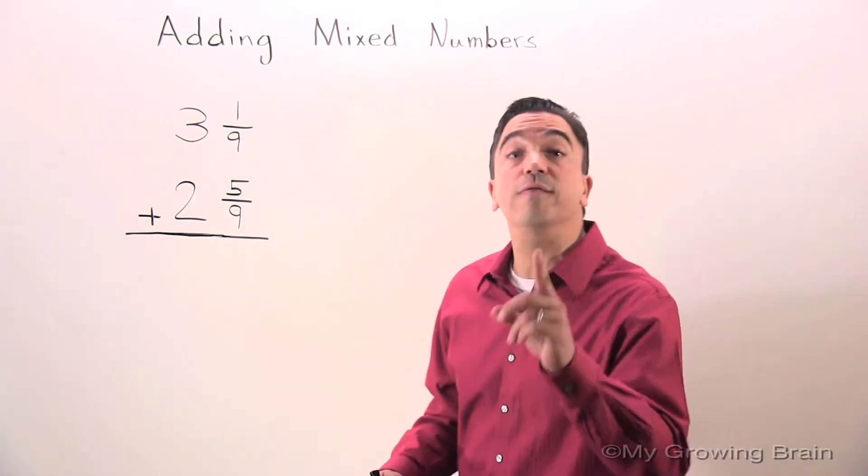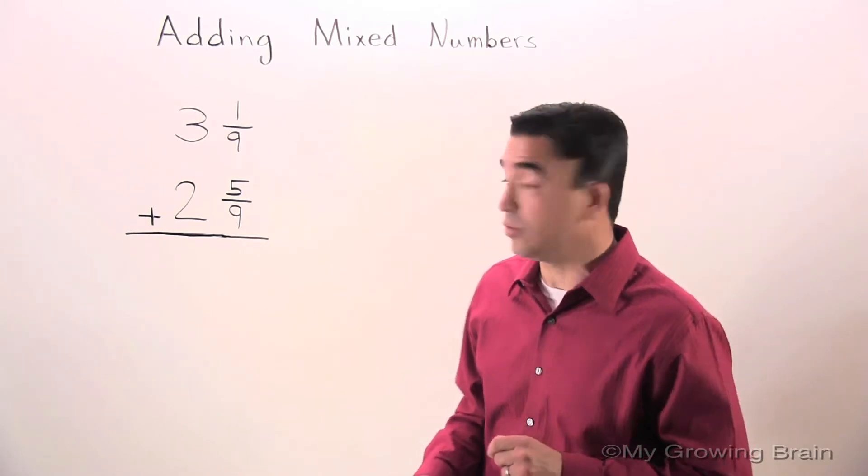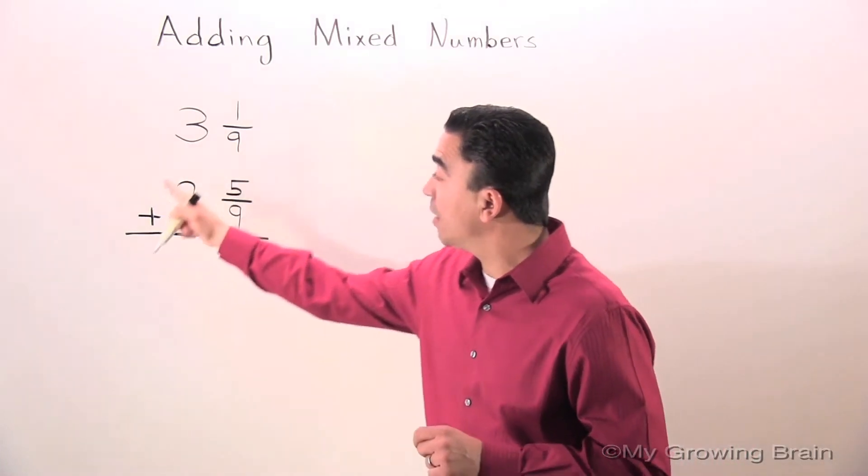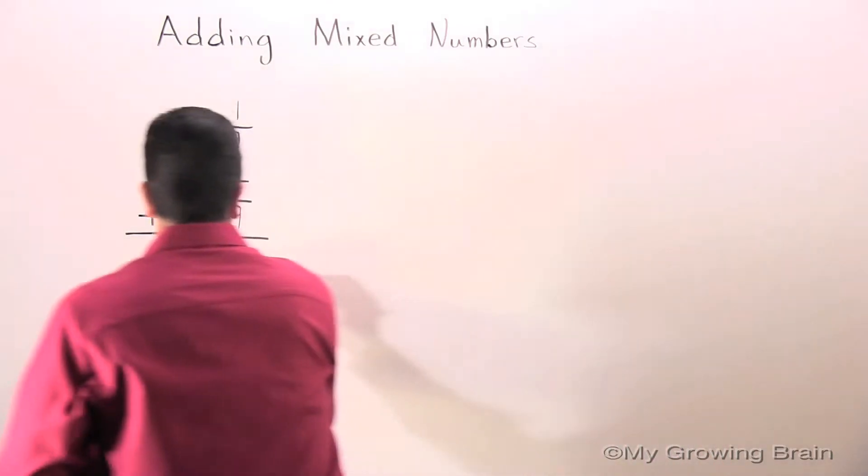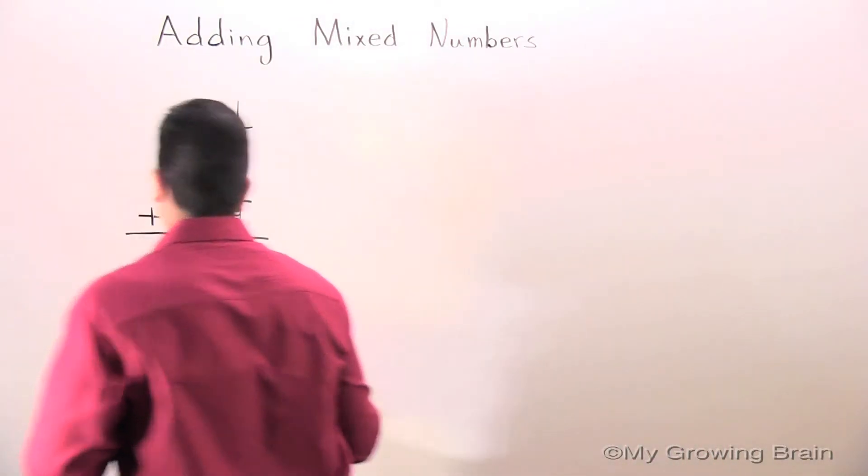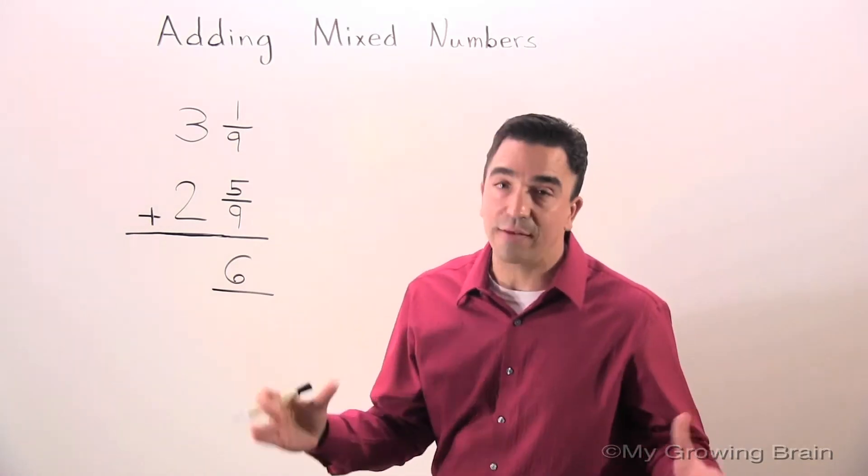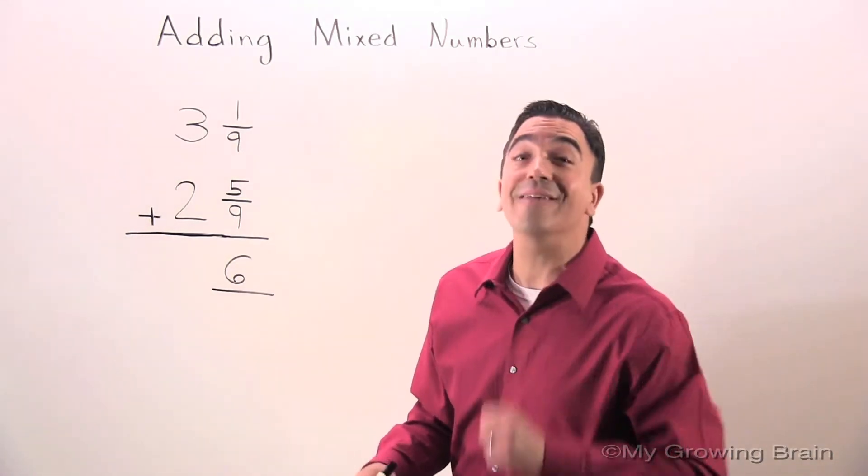So now we can focus on the numerators. 1 plus 5 is 6. Now don't forget, the denominator stays the same.